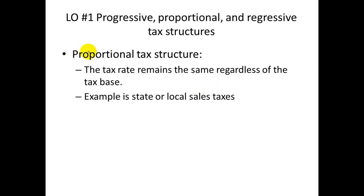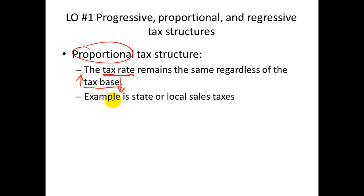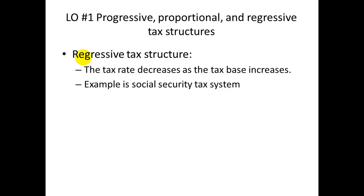In the case of a proportional tax structure, here's your tax base, and if the tax base is increasing, the tax rate doesn't change — it remains the same. Likewise, if the tax base goes down, that percentage stays the same. An example of that would be the sales taxes you have to pay. If you make a big purchase, you pay the same rate as a small purchase — that rate doesn't change.